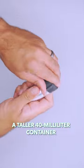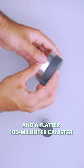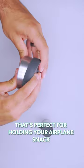You can get them in two sizes: a taller 40 milliliter container that looks like a pill bottle and a flatter 100 milliliter canister that's perfect for holding your airplane snack.